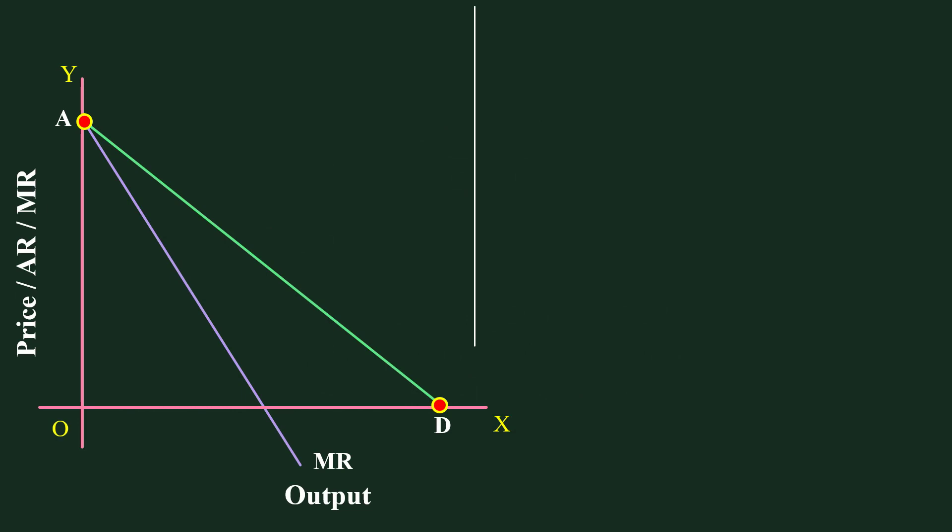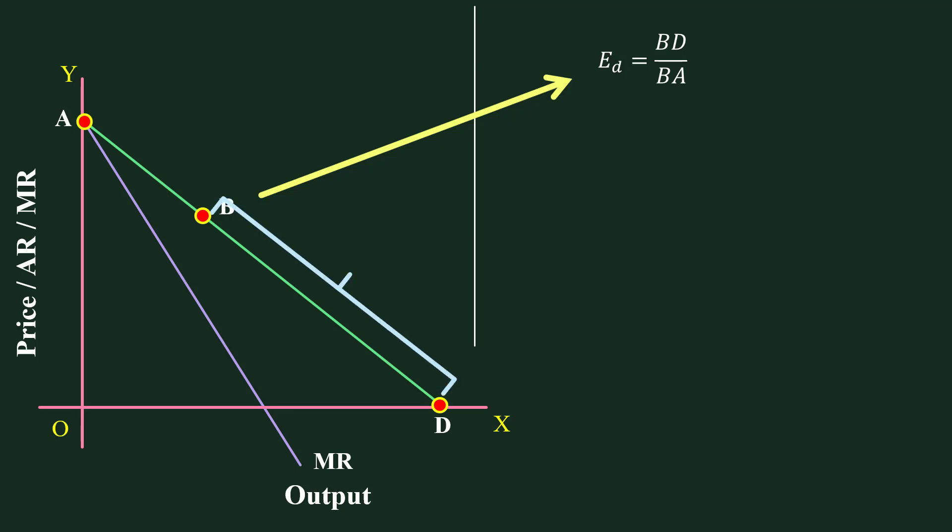Let us make use of this graph. According to the Geometric Method, Elasticity of Demand at point B is BD over BA, where BD is the length of the lower segment of the demand curve and BA is the length of the upper segment. From the lengths of BD and BA, we do not get any idea about Average Revenue and Marginal Revenue, so we have to find some means to incorporate them into our formula.